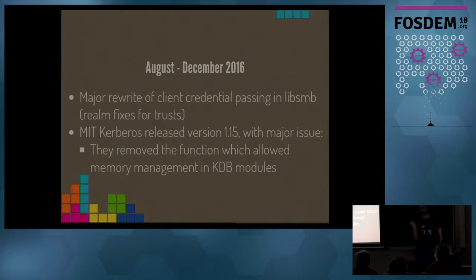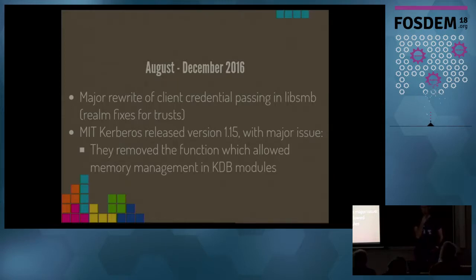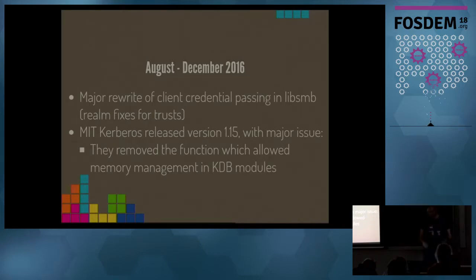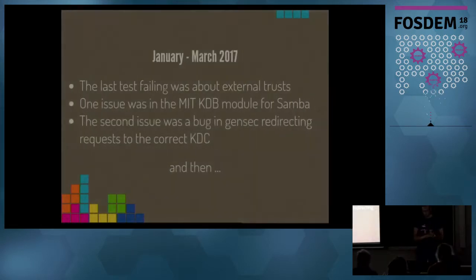At the end of 2016, MIT Kerberos 1.15 was released and we thought we had a release where Samba AD was working. But then we found out this version had a major problem: in the KDB API they removed the function that allowed memory management for KDB modules, so we were leaking memory. We needed to work together with the MIT Kerberos developers to bring back that API without breaking other KDB module implementations.